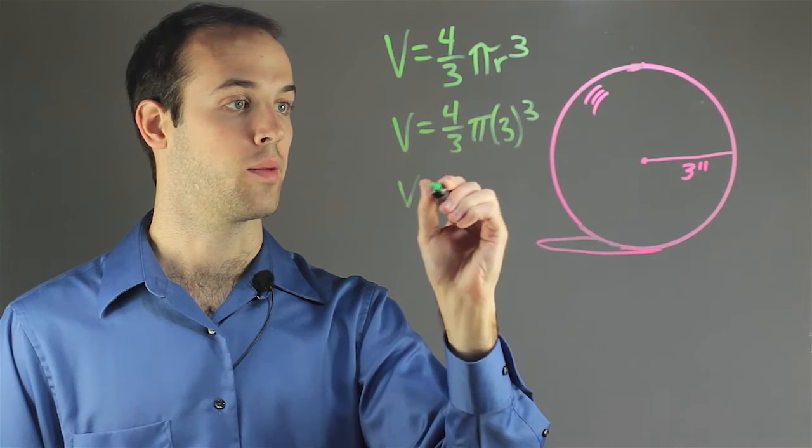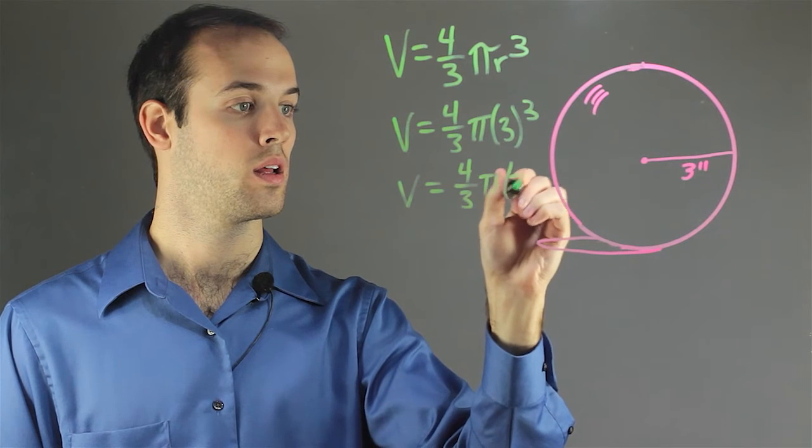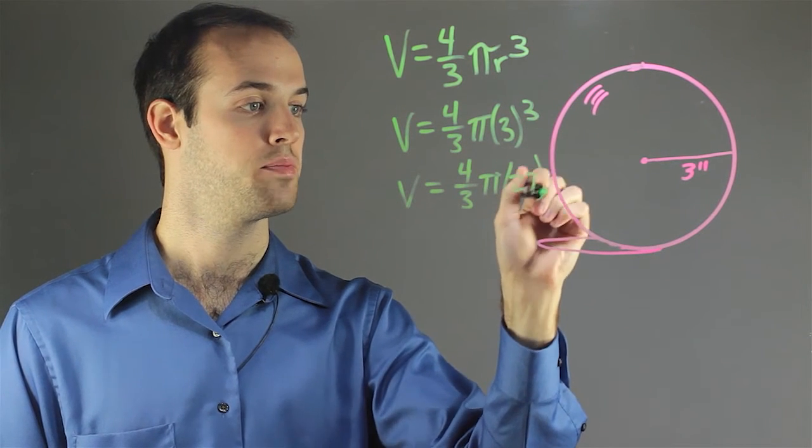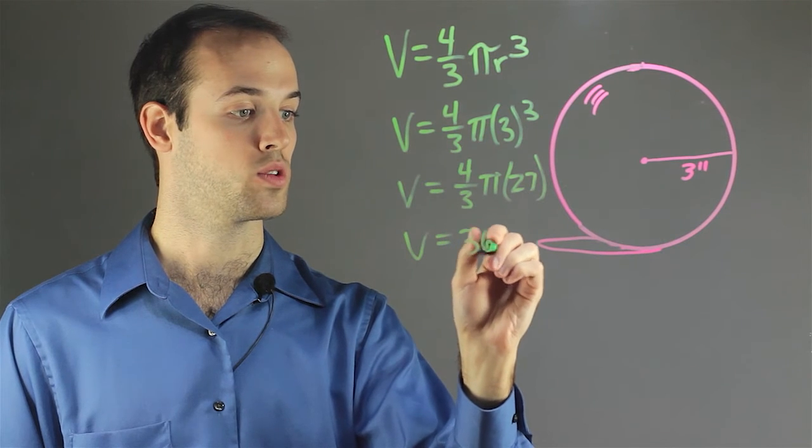And then I'm going to carry out that exponent, which is 27, and then I'll simplify that, and I'll get that v equals 36 pi.